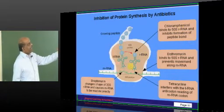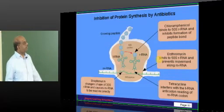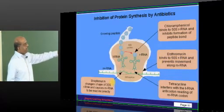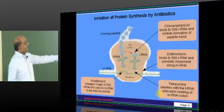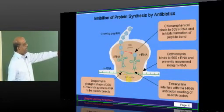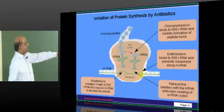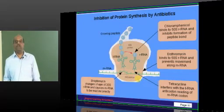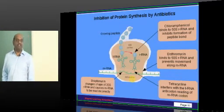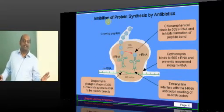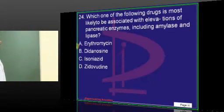Chloramphenicol, how does it act, doctor? It binds to 50S and inhibits the formation of the peptide bond. Erythromycin binds to 50S and prevents the movement along the mRNA. It won't let it to read. And tetracycline interferes with the tRNA anticodon reading of the mRNA codon. And streptomycin changes the shape of the tRNA and causes mRNA to be read incorrectly. This is too fast to say all these things. But you need to review. Totally 10 drugs, 10 mechanisms of action. Without that, there is no paper. I can assure you.